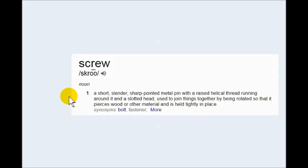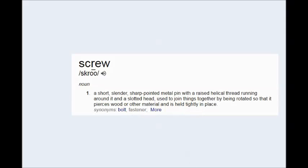A screw: a short, slender, sharp pointed metal pin with a raised helical thread running around it and a slotted head, used to join things together by being rotated so that it pierces wood or other material and is held tightly in place. So that's our screw, the second machine.